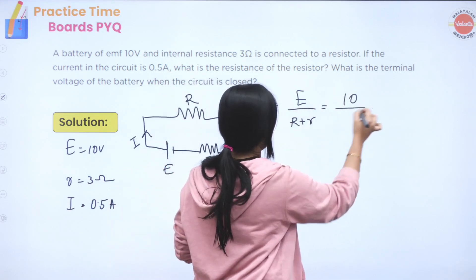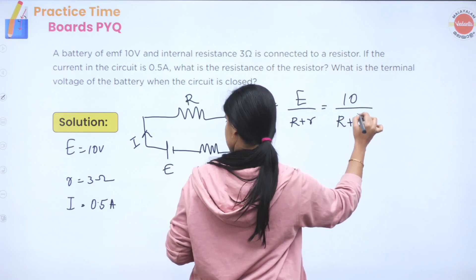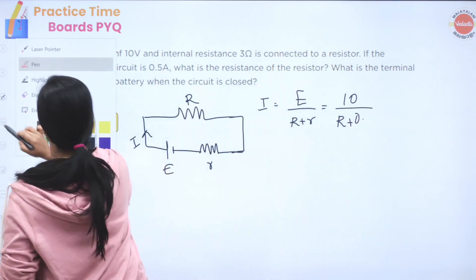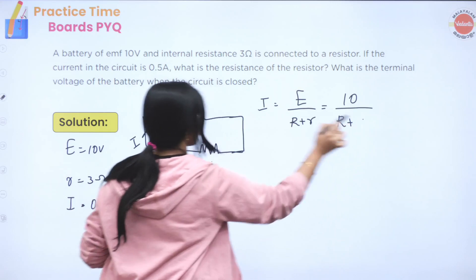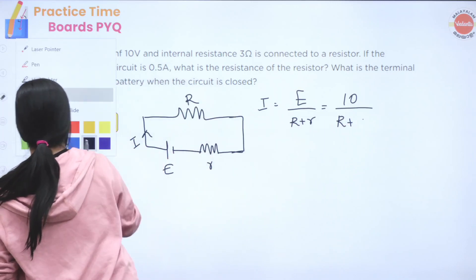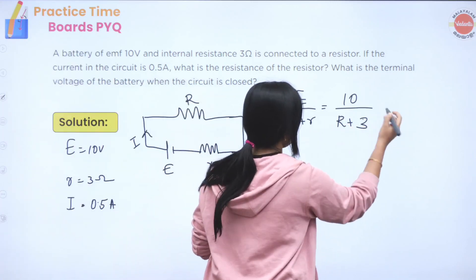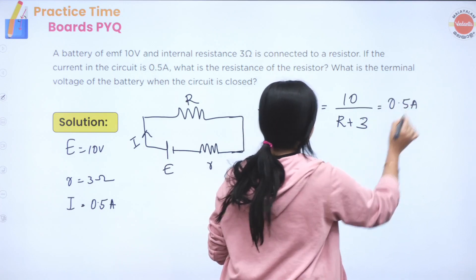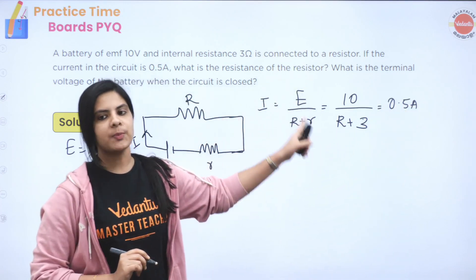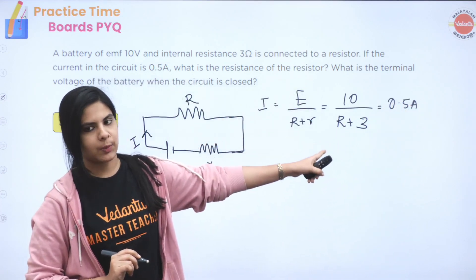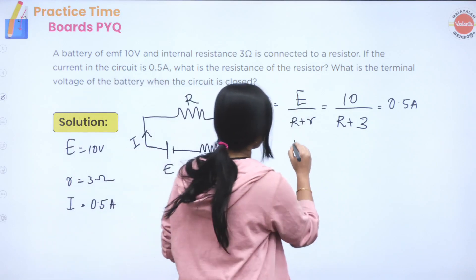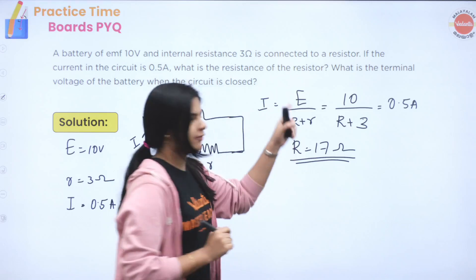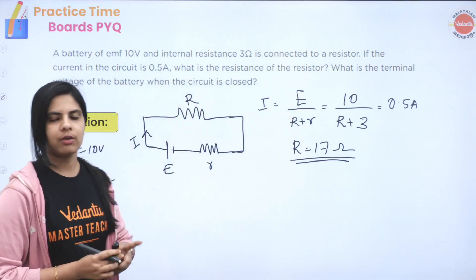Substituting values: E = 10 volt, I = 0.5 ampere, r = 3 ohm. So 0.5 = 10 / (R + 3), which gives R + 3 = 20, and therefore R = 17 ohm. The resistance of the resistor is 17 ohm.